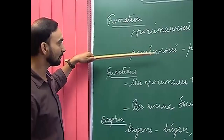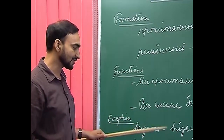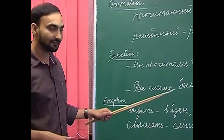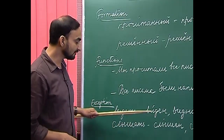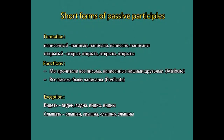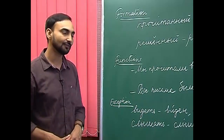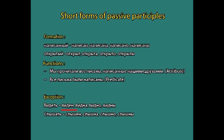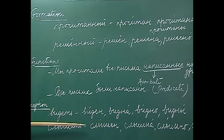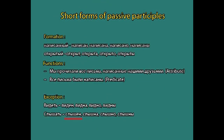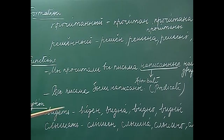One more important point regarding formation: there are some exceptions, like the verbs 'videt'' and 'slushat'', in which the short forms of the participles are derived from the infinitive form of the imperfective aspect. 'Videt'' is imperfective, 'slushat'' is imperfective. The short forms derived from 'videt'' are: 'viden', 'vidna', 'vidno', 'vidny'. These are the short forms formed from 'videt'' and 'slushat''.